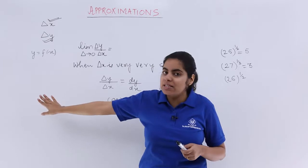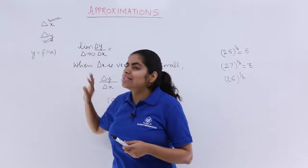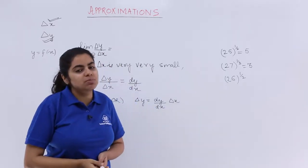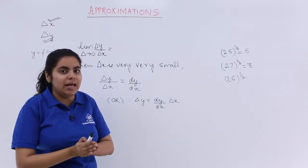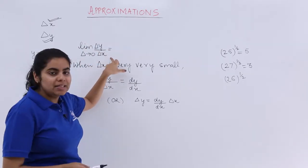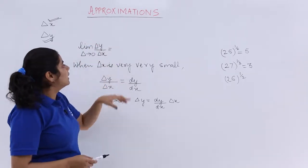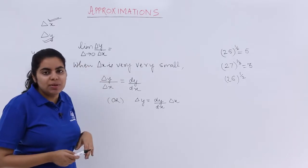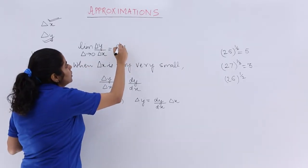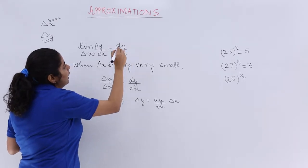I repeat: y is the function of x given to me, del x is the small change in x, del y is the small change in y corresponding to the small change in independent variable x. Now what is the value of del y upon del x when the limit del x tends to 0? We know that it should be dy by dx.